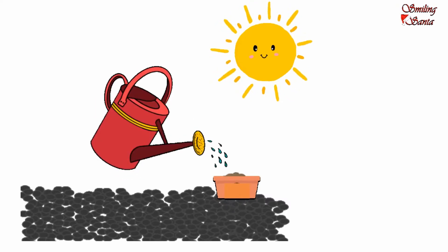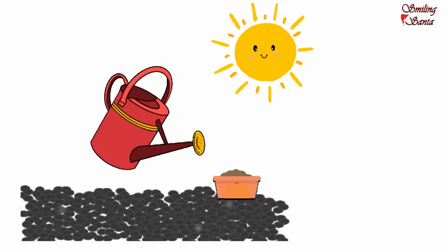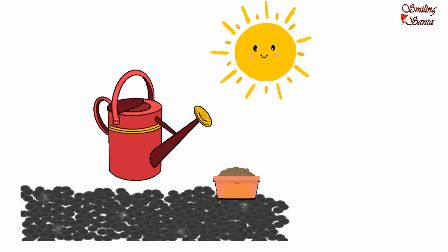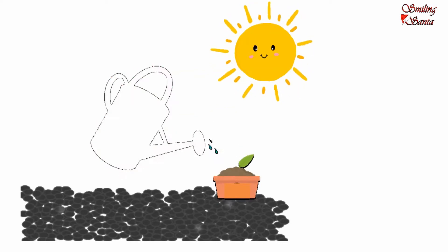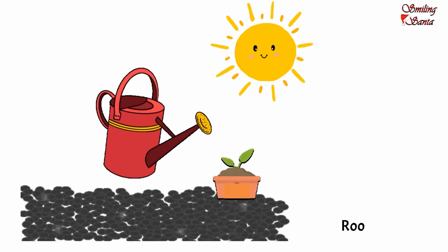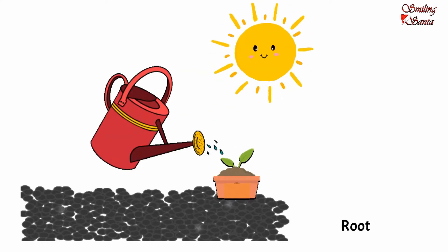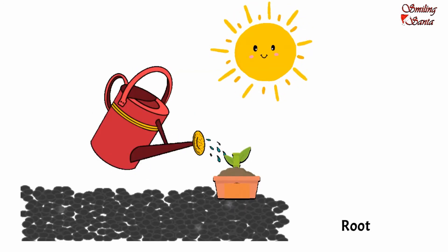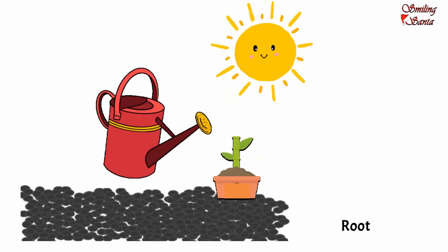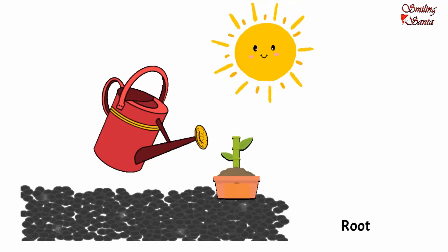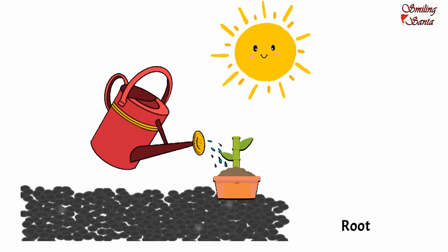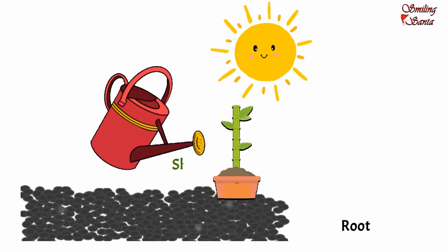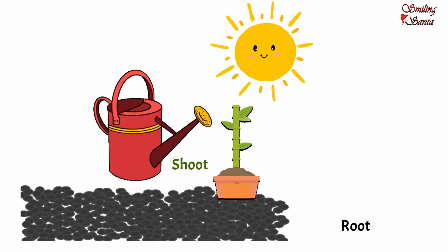The parts of a plant which grow below the soil and cannot be seen are called the root of a plant. The parts of a plant which grow above the soil and can be seen are called the shoot of a plant.